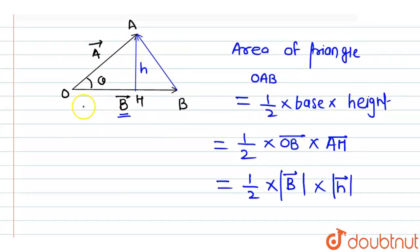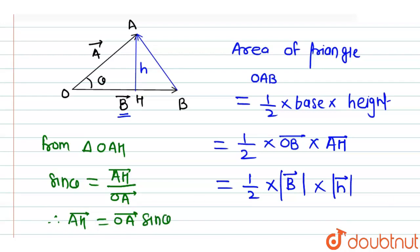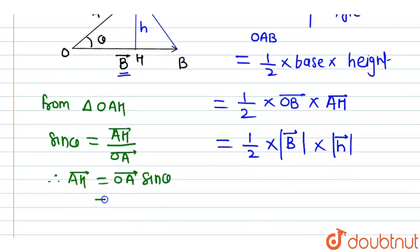sin theta is equal to opposite side AH bar divided by hypotenuse OA bar. Therefore, AH bar will be equal to OA bar into sin theta, which will be equal to, but OA bar is A bar, so A bar into sin theta.